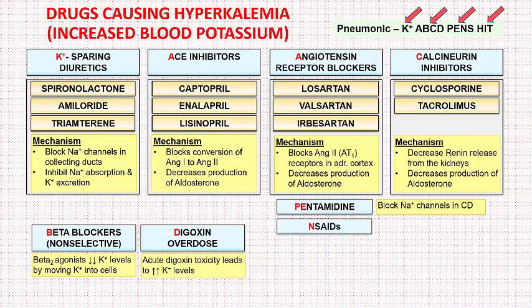Next come NSAIDs — non-steroidal anti-inflammatory drugs. NSAIDs block the synthesis of prostaglandins. Decreased prostaglandin synthesis suppresses renin and aldosterone secretion, which may result in sodium excretion and potassium retention.